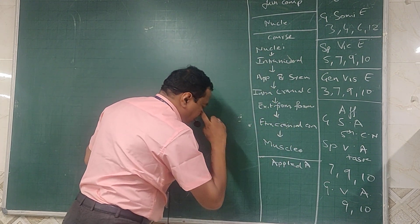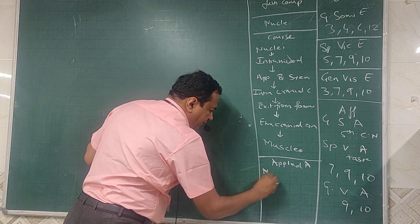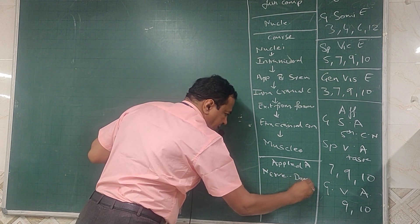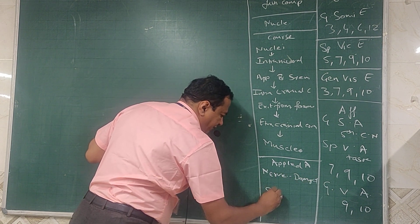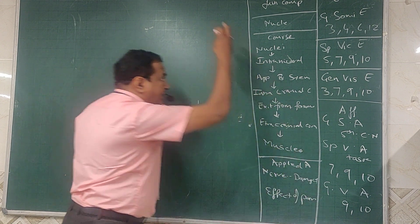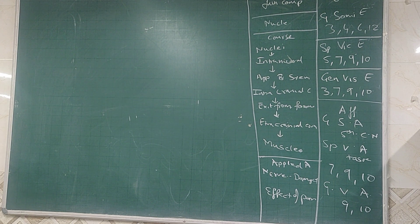In applied anatomy, how is a nerve damaged and what are the effects of paralysis? This is the format in which we write a cranial nerve.